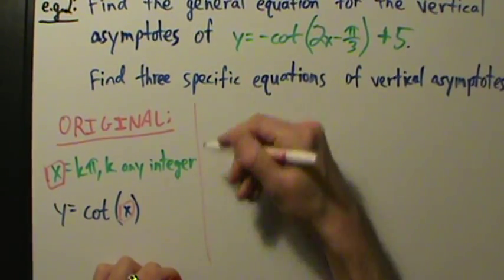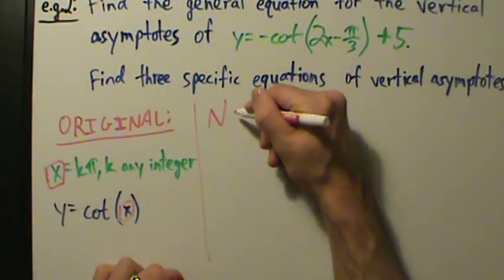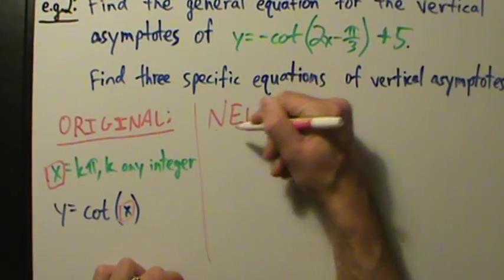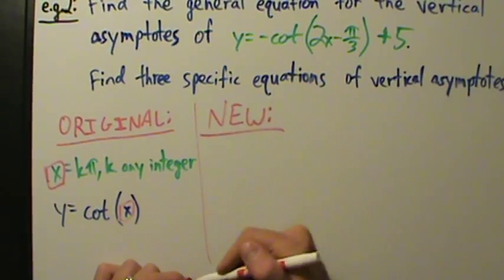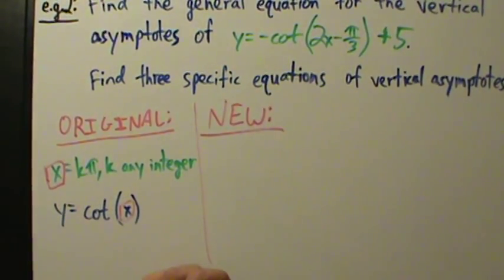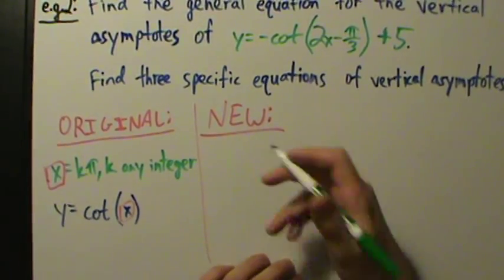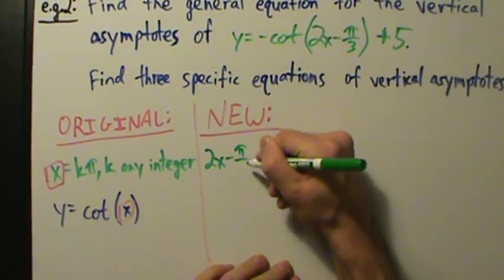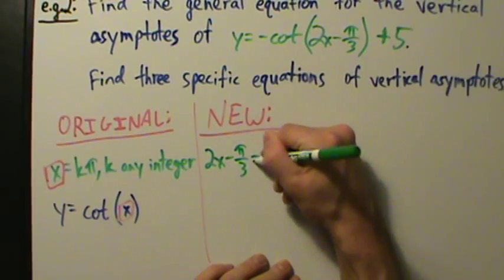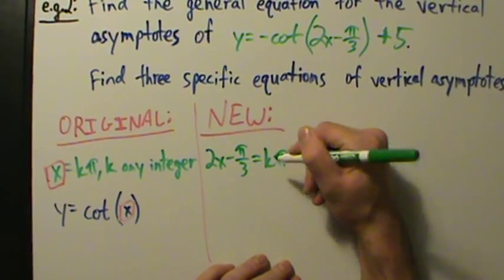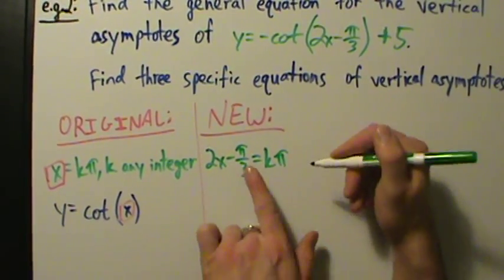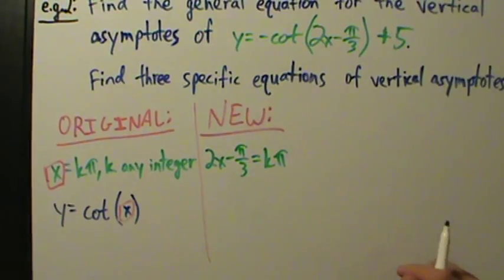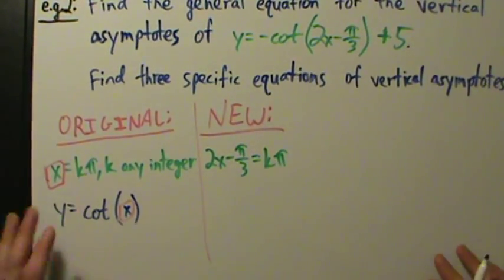So the new equation is going to be: take the entire expression inside of the trig function, 2x minus pi over 3, and set it equal to k pi, where k is any integer.